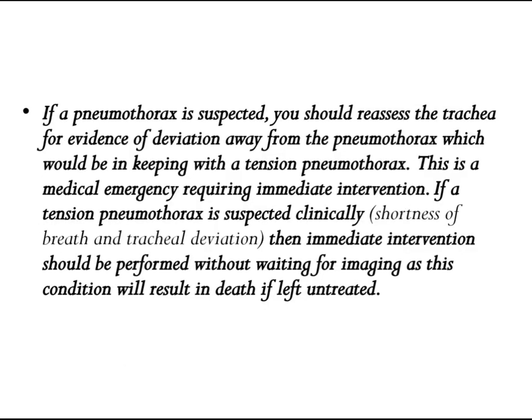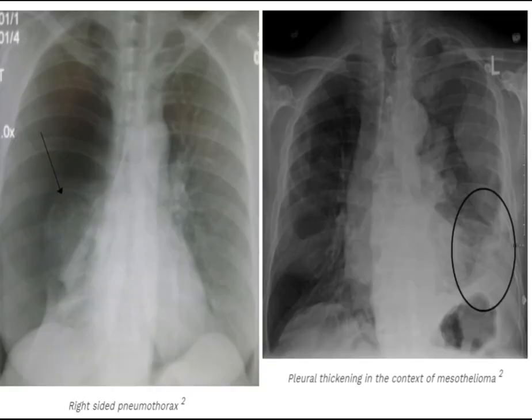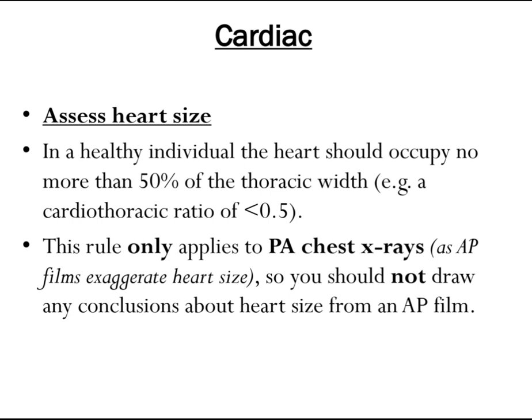If a pneumothorax is suspected, reassess the trachea for evidence of deviation away from the pneumothorax, which would be consistent with a tension pneumothorax — a medical emergency requiring immediate intervention. If a tension pneumothorax is suspected clinically, with shortness of breath and tracheal deviation, immediate intervention should be performed without waiting for imaging, as this condition will result in death if left untreated. The diagrams show a right-sided pneumothorax and pleural thickening in the context of mesothelioma.